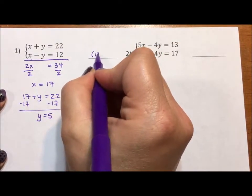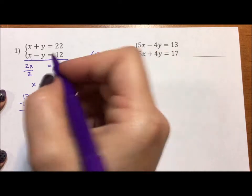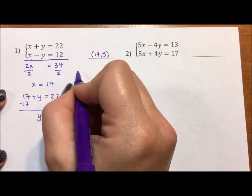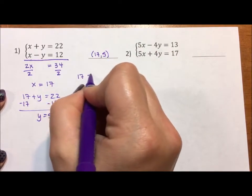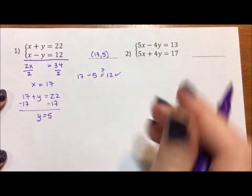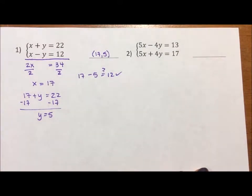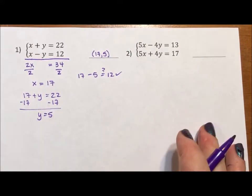So let's check it with the second equation. Is 17 minus 5 really equal to 12? It is, and I'm very secure in my answer. The beauty about systems is you can always check your work really easily.